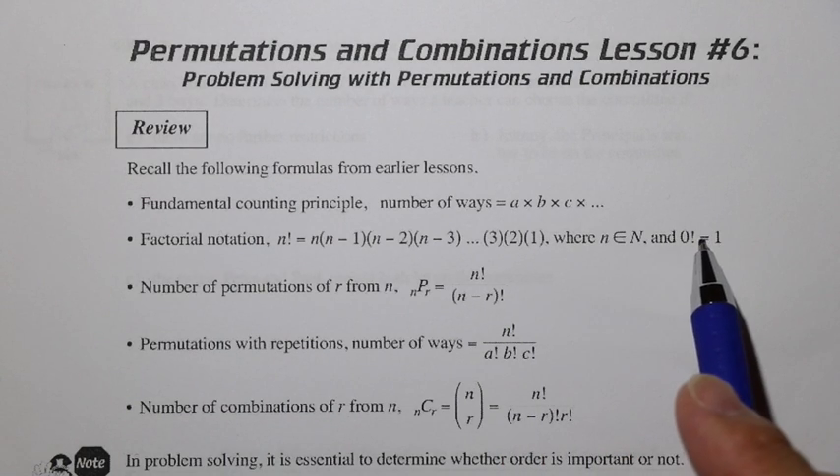Factorial notation, N with an exclamation mark, means N times N minus one times N minus two times N minus three, and down by one all the way until we get to one. N is a natural number. We should also remember that zero factorial is equal to one.